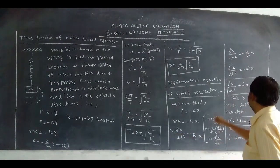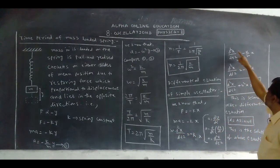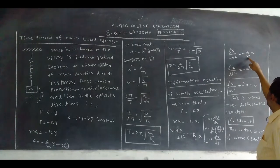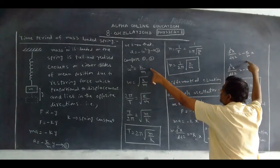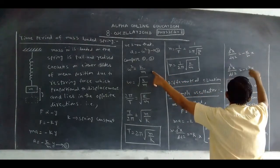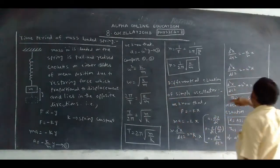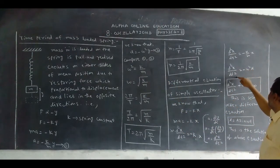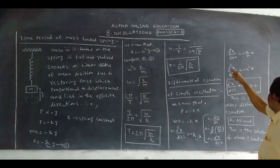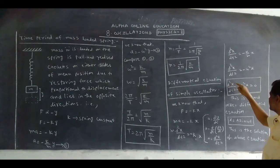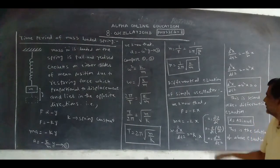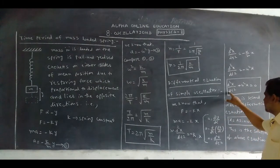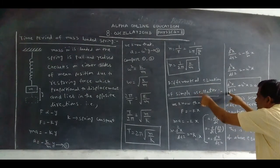Substituting, we get d²x/dt² = -KX/M, i.e., d²x/dt² = -(K/M)X. Since K/M = ω², we have d²x/dt² = -ω²X. Rearranging, d²x/dt² + ω²X = 0. This is the differential equation of the simple oscillator.